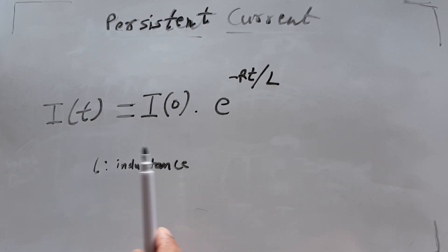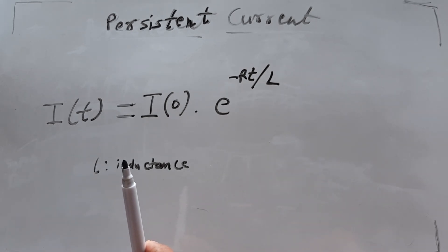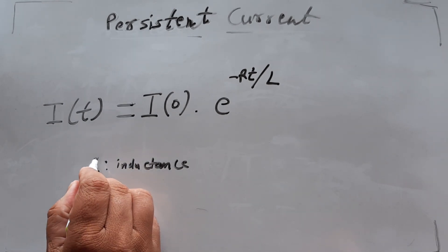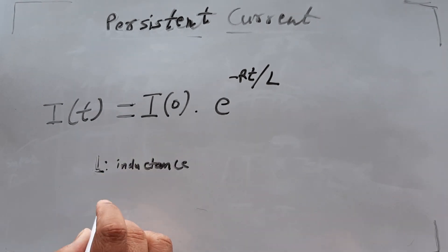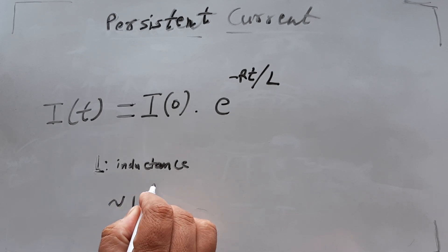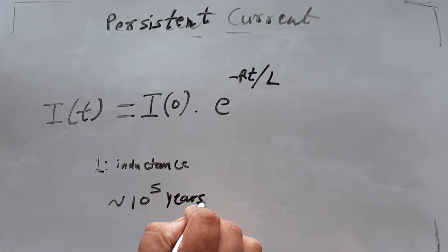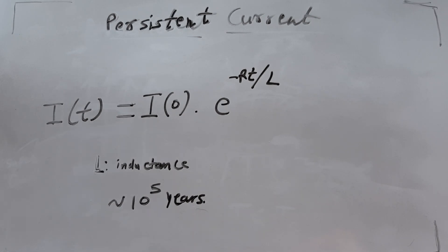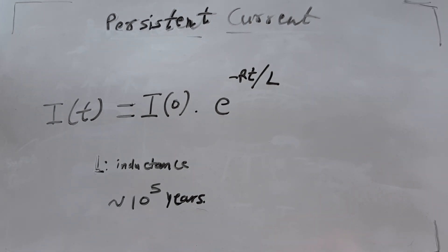The current can persist for more than 10 million years — it can just keep circulating. That is a very interesting phenomenon and it happens in the real world. This was all about persistent current; see you in the next lecture.